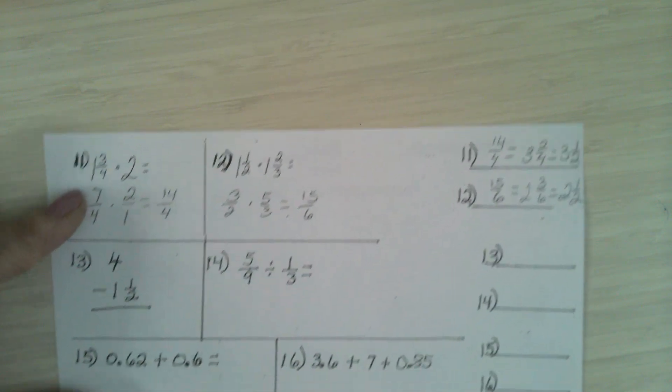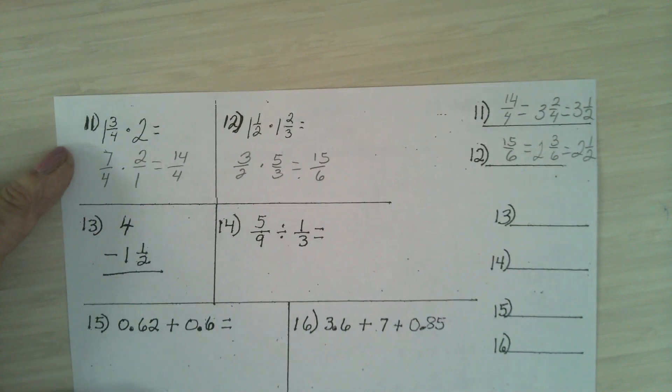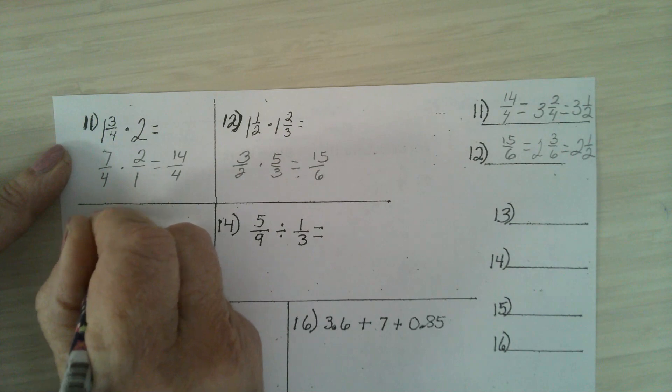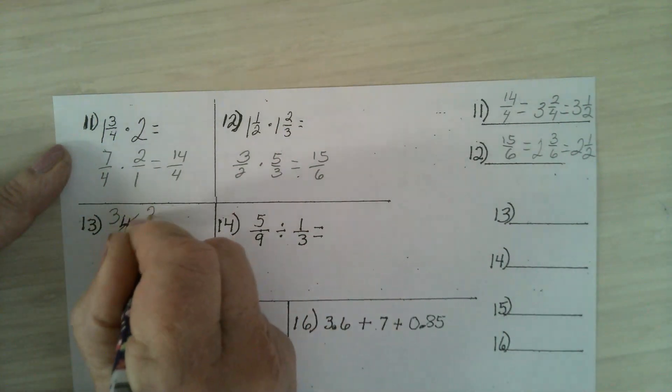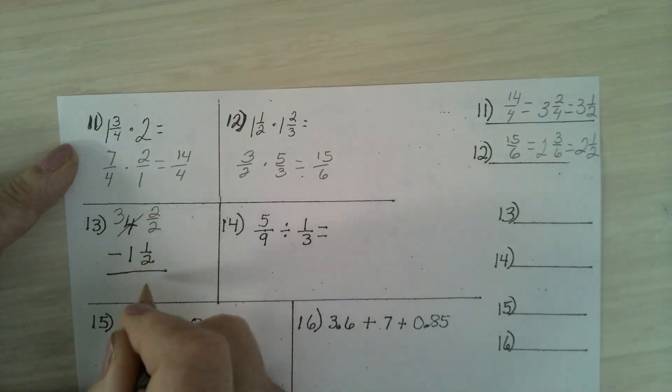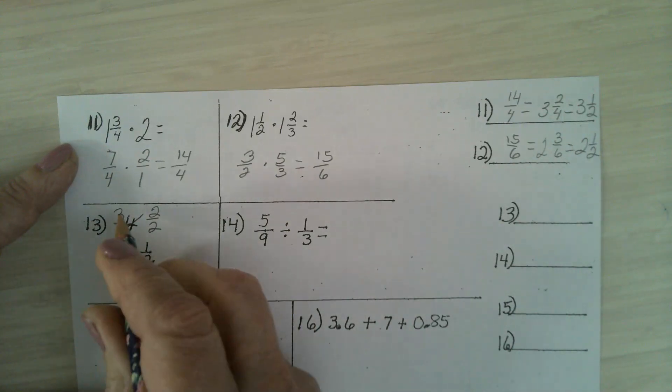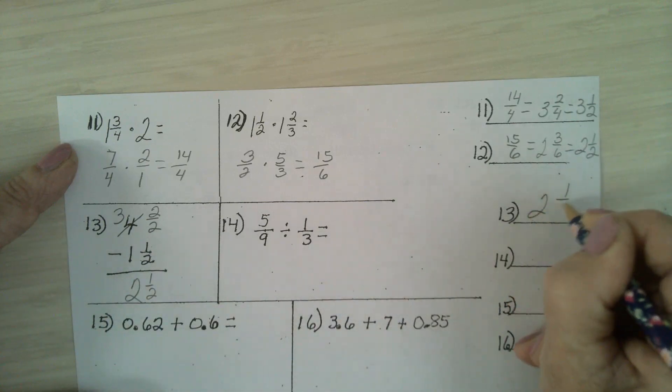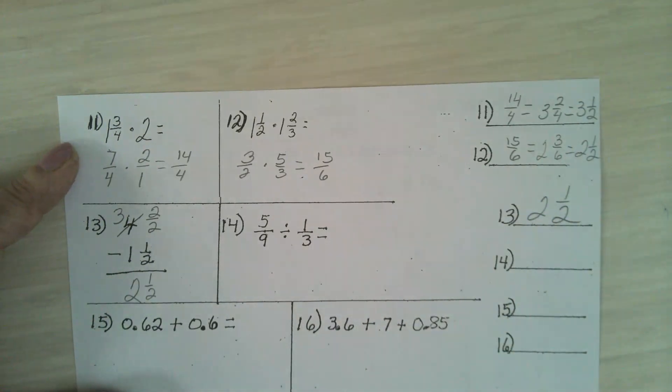This one a lot of you missed. When you borrow from the 4, you have to remember you change it to a 3. 3 and 2/2. Does everyone see that? 2/2 minus 1/2 is 1/2. 3 minus 1 is 2. The answer is 2 and 1/2. Any questions?